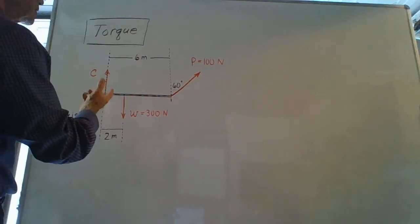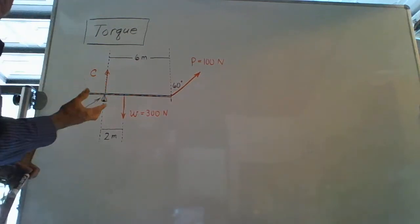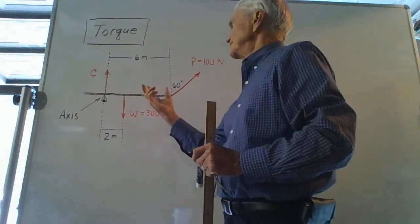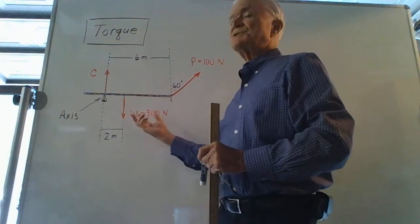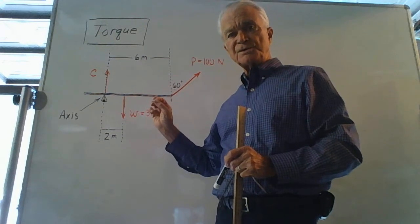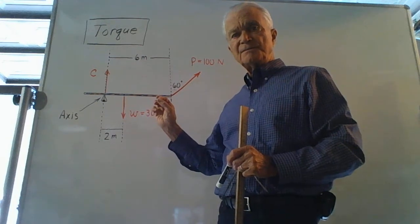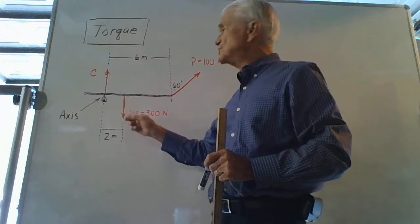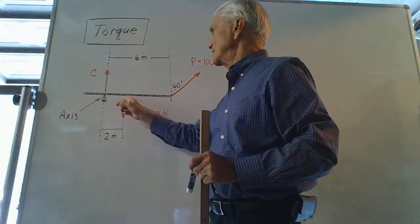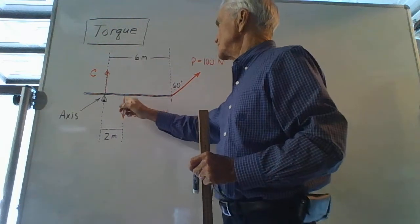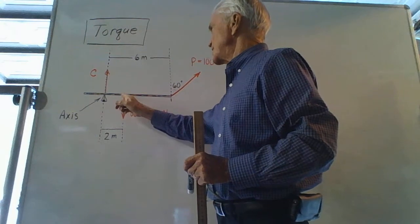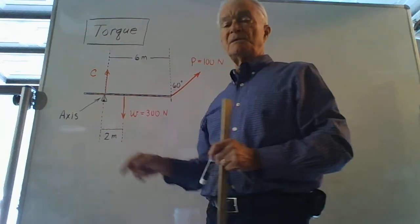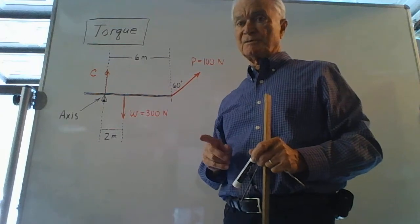The effect of Earth's pull on the infinity of particles in this rod is the same as if there were a single force of 300 newtons applied to the center of the rod. The center of the rod is at a distance of 2 meters from the axis, the fulcrum.